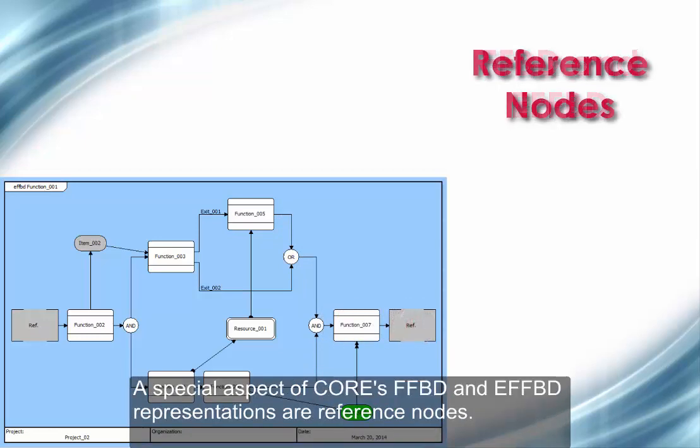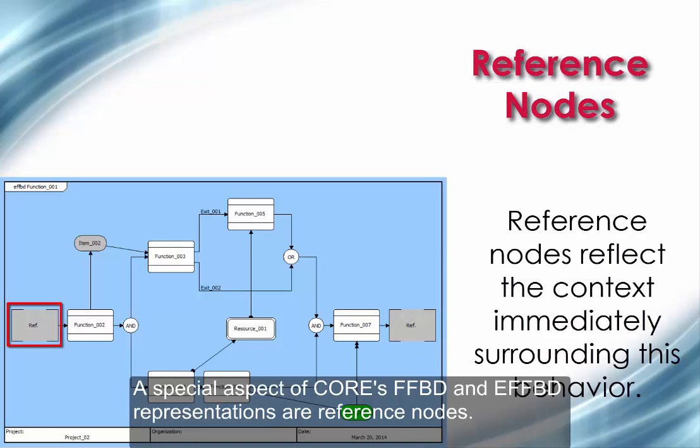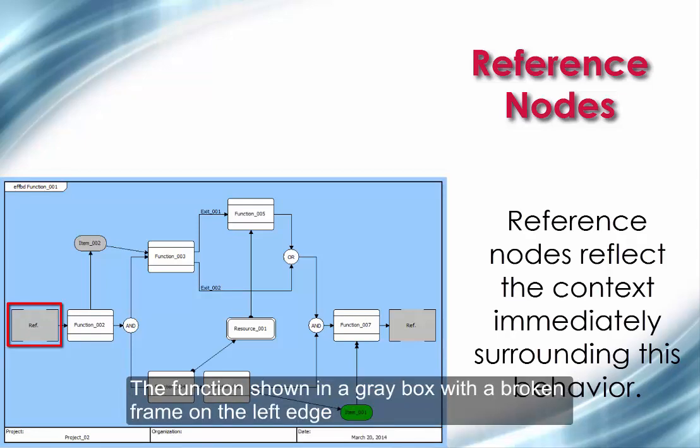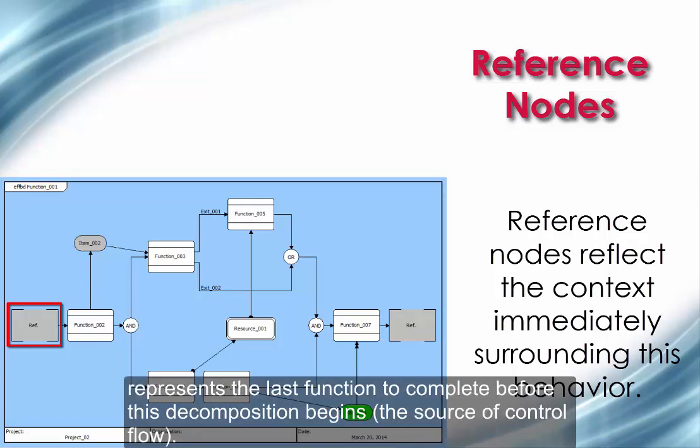A special aspect of CORE's FFBD and EFFBD representations are reference nodes. Reference nodes reflect the context immediately surrounding this behavior. The function shown in a gray box with a broken frame on the left edge represents the last function to complete before this decomposition begins, the source of control flow.